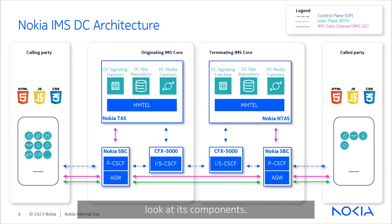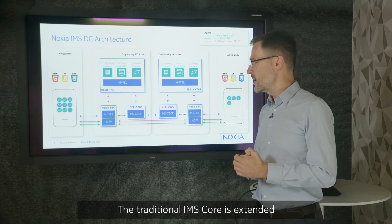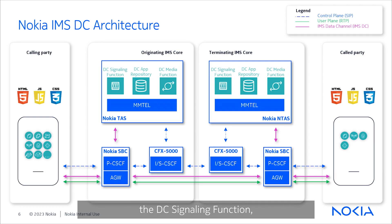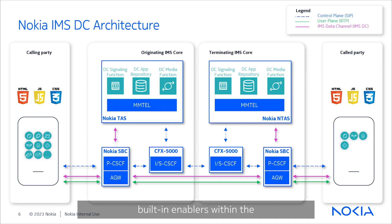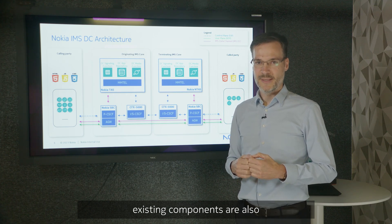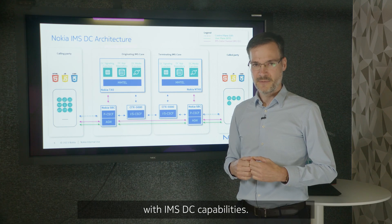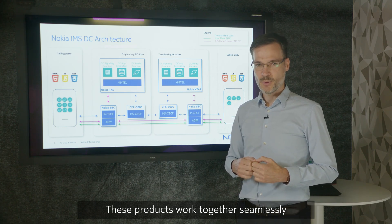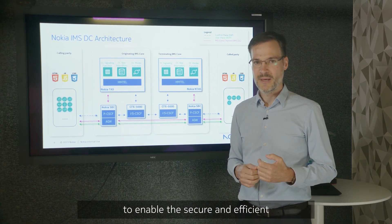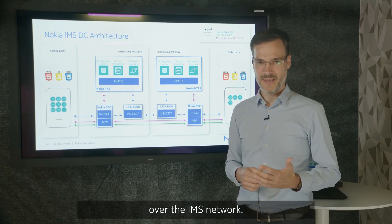To understand the IMS Data Channel architecture, let's take a closer look at its components. The traditional IMS core is extended with three new functions: the DC Signaling Function, the DC Application Repository, and the DC Media Function. These will be native built-in enablers in the Nokia Tess, while the CFX 5000 and the Nokia SBC existing components are also going to be enhanced with IMS DC capabilities. These products work together seamlessly to enable the secure and efficient transmission of data over the IMS network.